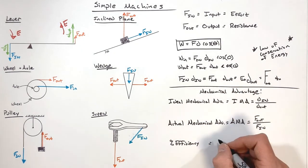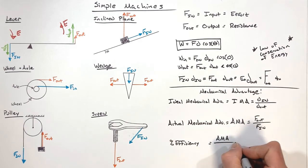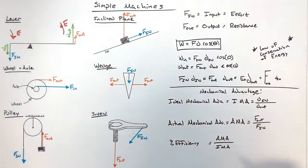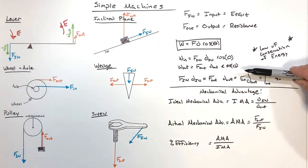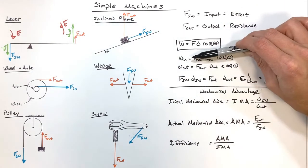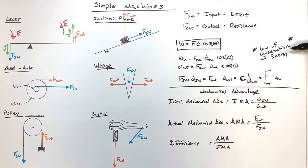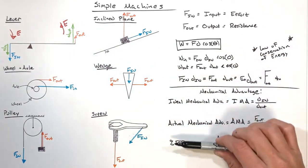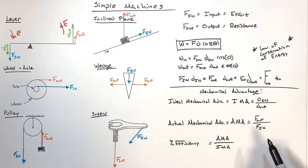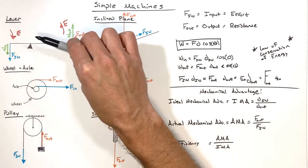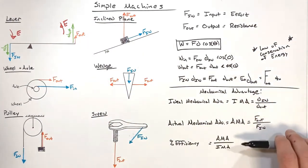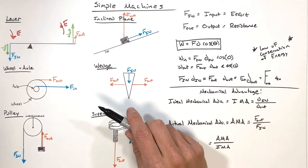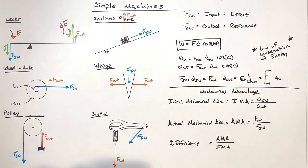This brings us to percent efficiency, which is simply defined as AMA over IMA. So we have six types of simple machines, and simple machines are really used to exchange force for displacement through the conservation of energy. We have two types of mechanical advantage and percent efficiency. In the next video, we'll look at each individual simple machine and do some example problems to put these mechanical advantage equations and our work formula to work.